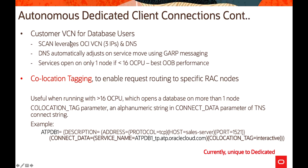For customer VCN database user connections, SCAN (Single Client Access Name) leverages the OCI VCN. SCAN uses three IP addresses and DNS, which automatically adjusts on service moves using GRP messaging. Service opens on only one node if using fewer than 16 OCPUs. Co-location tagging enables request routing to specific rack nodes — unique to Autonomous Dedicated — and is useful when running with more than 16 OCPUs, opening the database on more than one node. The co-location tag is an alphanumeric string in the CONNECT_DATA parameter of TNS.